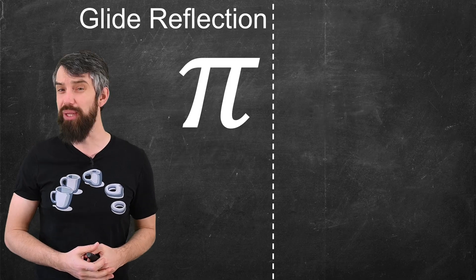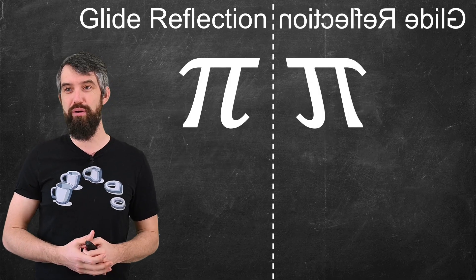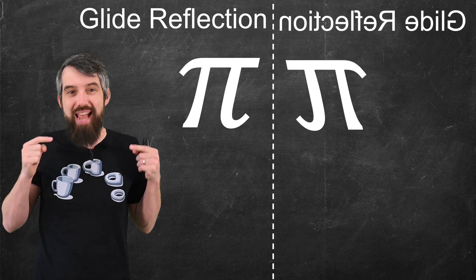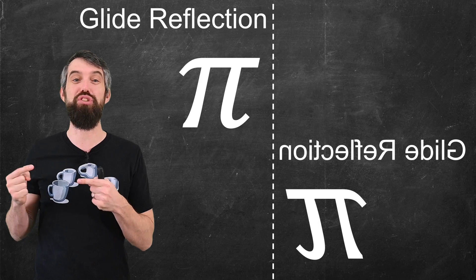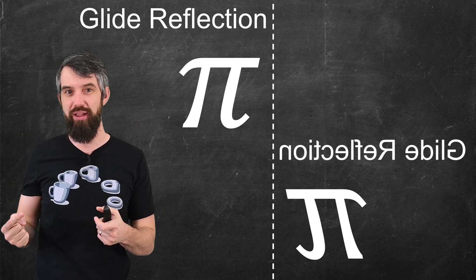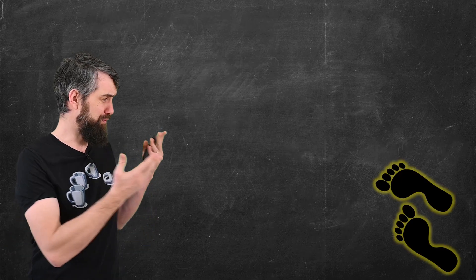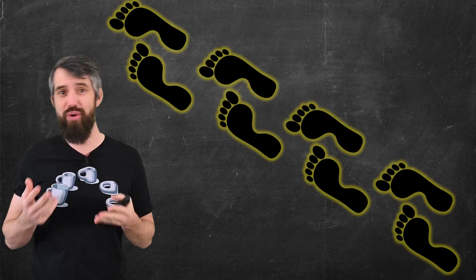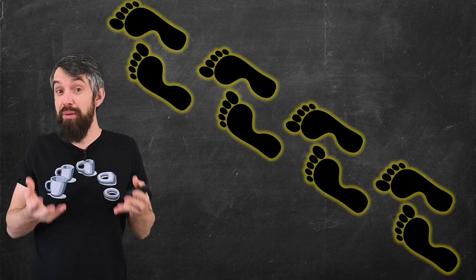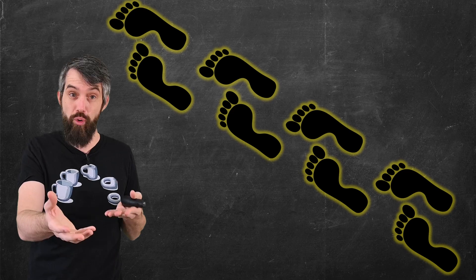There's also another really cool one called glide reflections. It's kind of like a mirror reflection. You reflect over this line of symmetry. But then you glide down the line of symmetry, and you have sort of two things at once. This gliding as well as this reflection. My favorite example of this is just footprints walking in the sand. Left, right, left, right, left, right, and so forth. A left and right footprint is approximately a mirror image of each other, but glided forward.